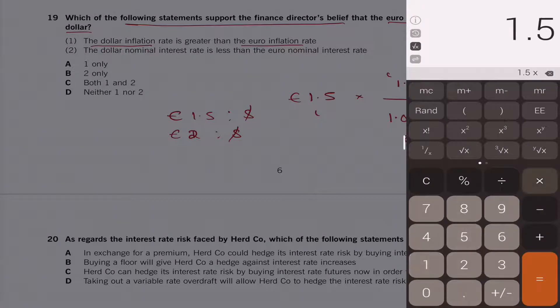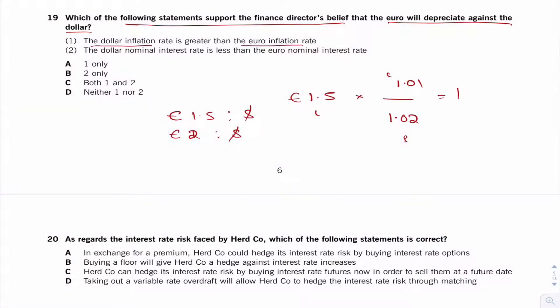1.5 times 1.01 divided by 1.02. Obviously, I've just made up these figures. It equals 1.48. So it's getting smaller, meaning it's getting stronger, so it's not that one.